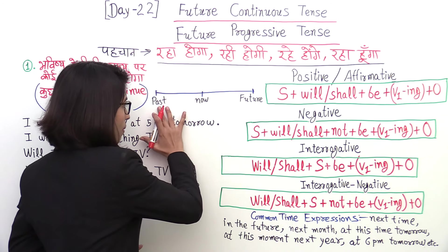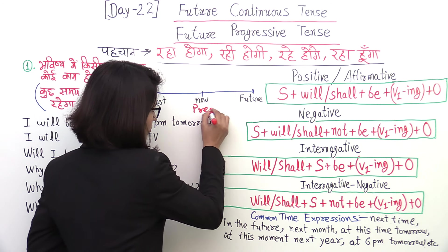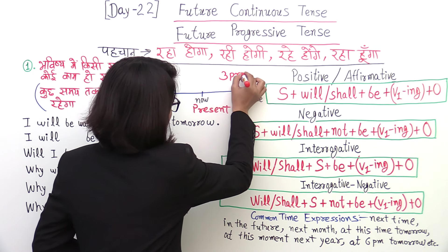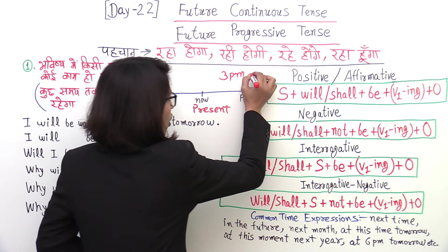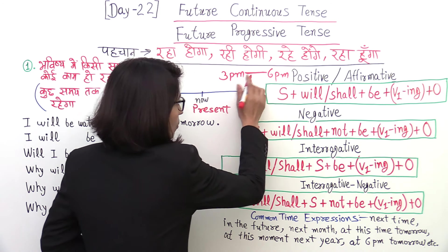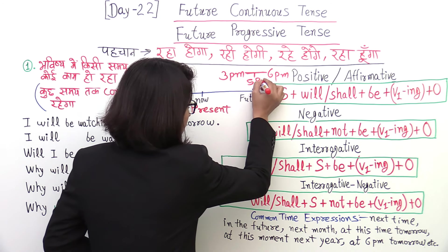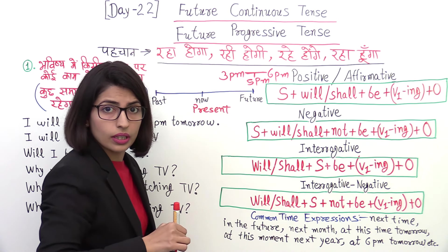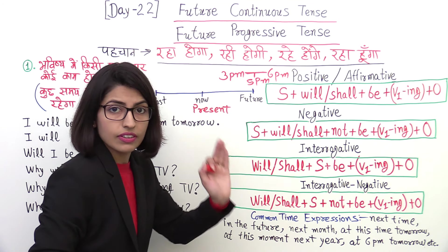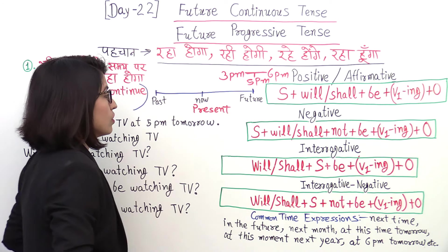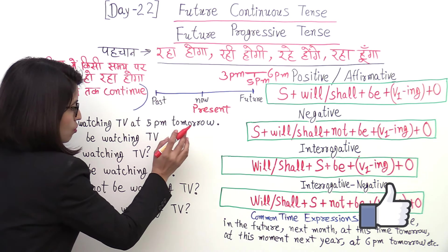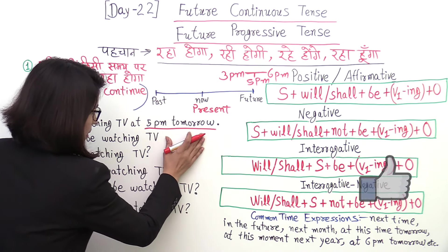Let me explain with a timeline. Here is the past, here is the present (now), and here is the future. Suppose a movie starts at 3 pm on TV and continues until 6 pm. So in the middle, at 5 pm, I will be watching TV — the movie is running. So when it starts at 3 and ends at 6, at 5 pm I will be watching TV.